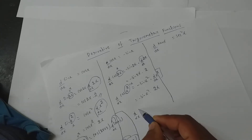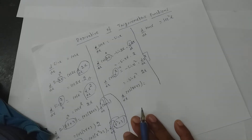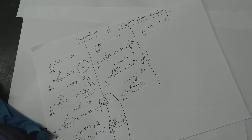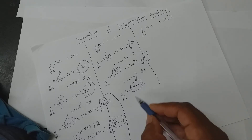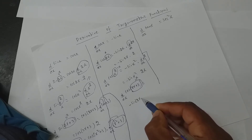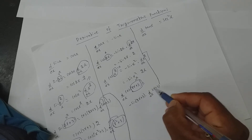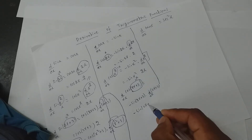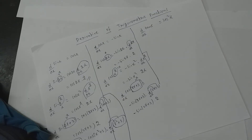Next, if it is d/dx of cos of 2x plus 3, again you will assume this entire part to be x. It is of the form cos x, and cos x is minus sin x. So it is minus sin of 2x plus 3, into whatever you assumed in place of x. So minus sin of 2x plus 3 into 2 — this applies to 2x and also to 3.